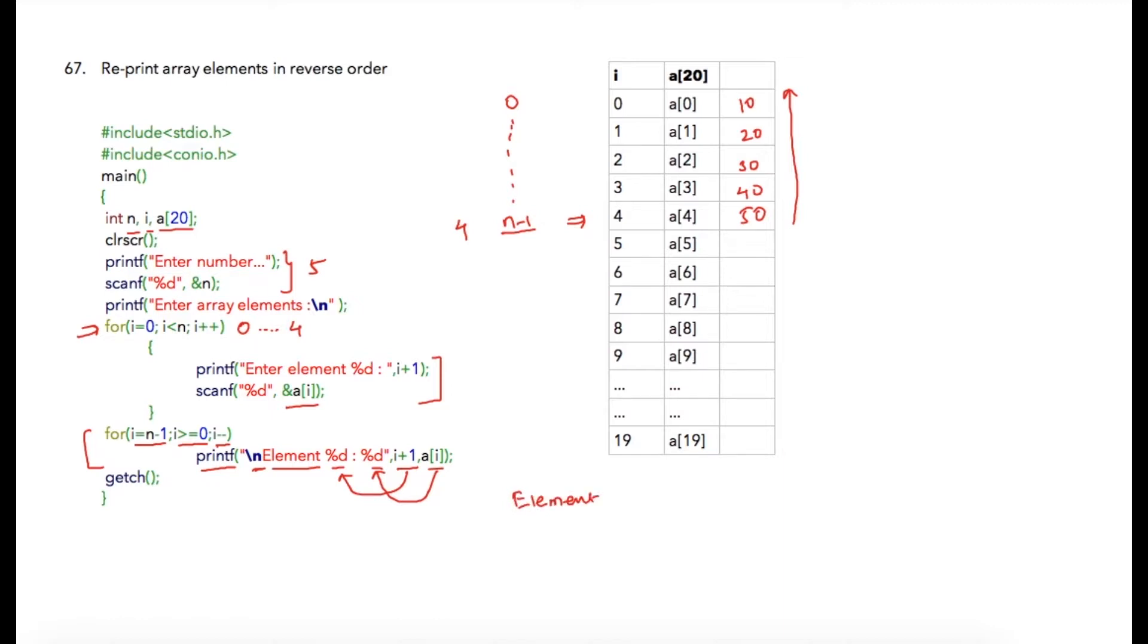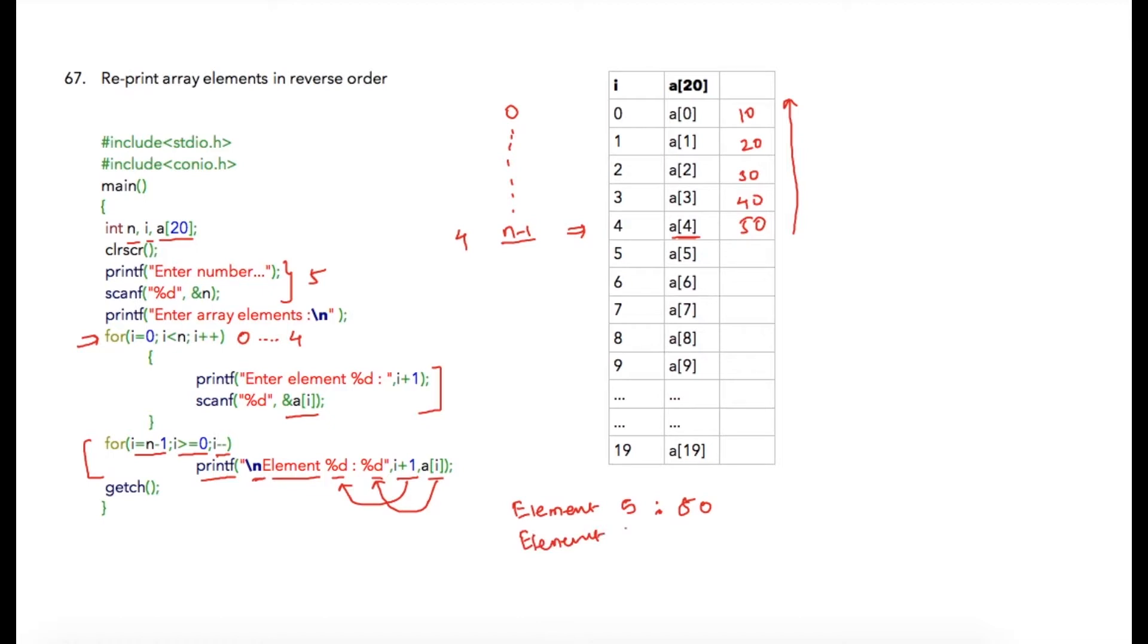Output in the first iteration will be element i plus one, so current value of i is four so four plus one that is five, so element five colon a of four that is 50. Then on the next line element four colon 40, again in the next iteration element 3 colon 30, the next iteration element 2 colon 20, and in the final iteration element 1 colon 10.